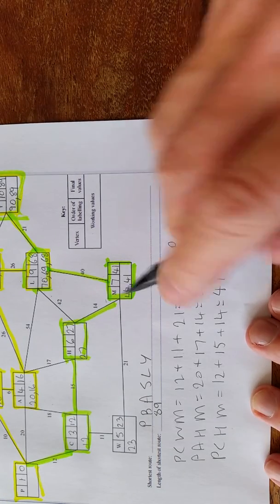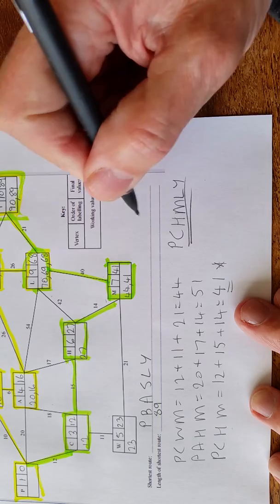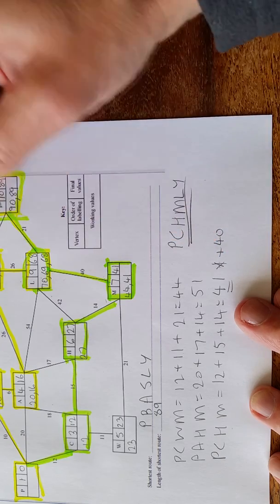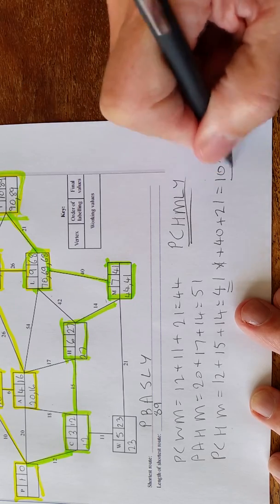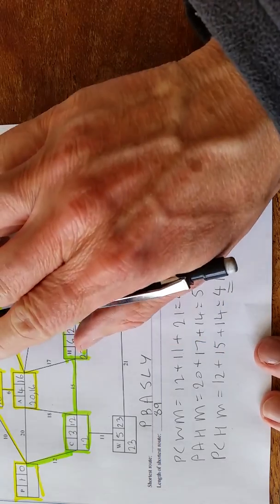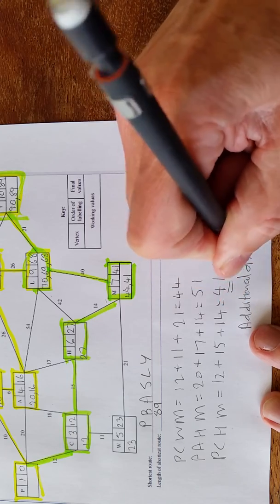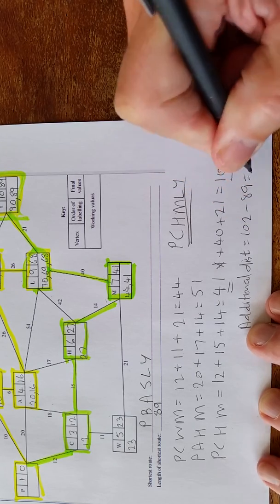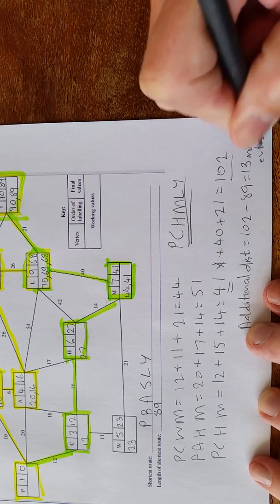And we want to work this out. So we've got, add all of these. We had 41, and then we add this from M to L, that's another 40. So 41 plus 40, and then 21. So we end up with 102. Now the original one was 89. So the difference, the additional distance, equals 102 subtract 89, which equals 13 miles extra. That's the final answer.